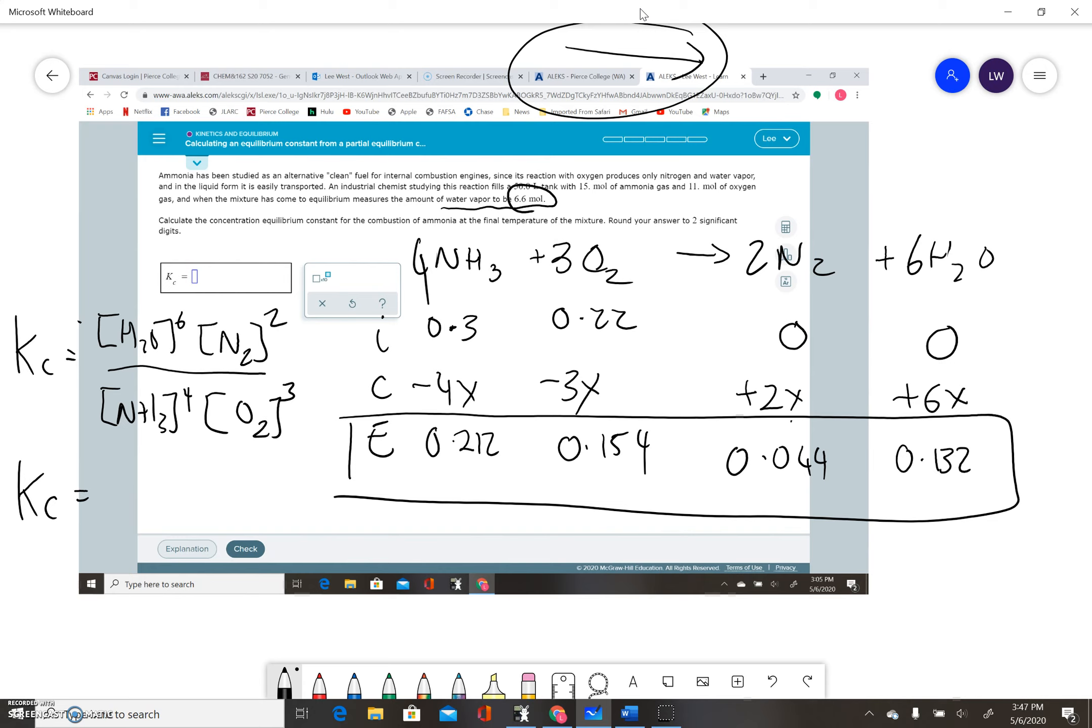So 0.132 to the power of 6 times 0.044 squared—that's my top line—divided by 0.212 to the power of 4 times 0.154 to the power of 3. When I do that, I end up with 1.388 times 10 to the minus 3.